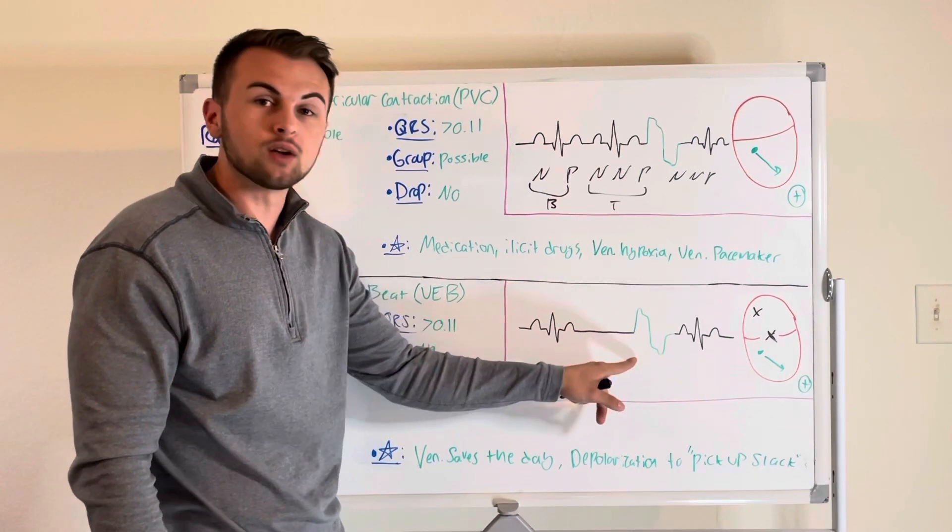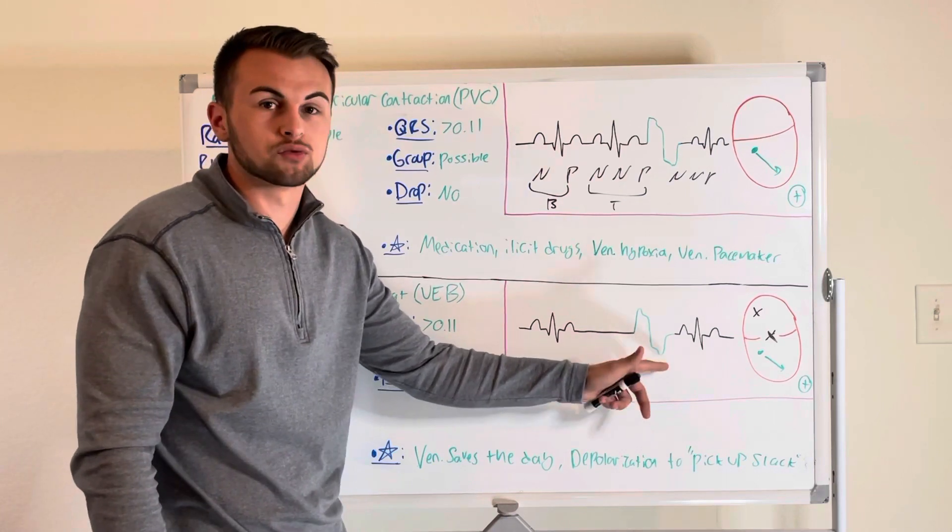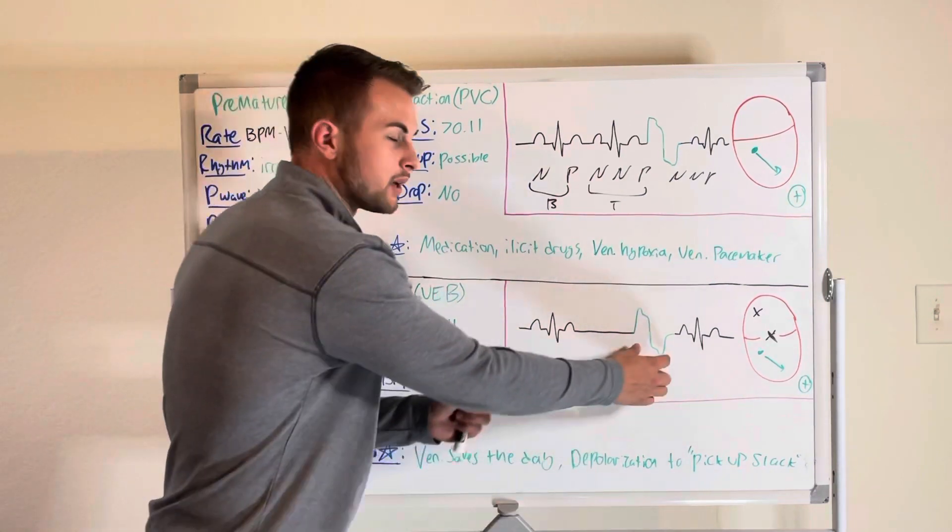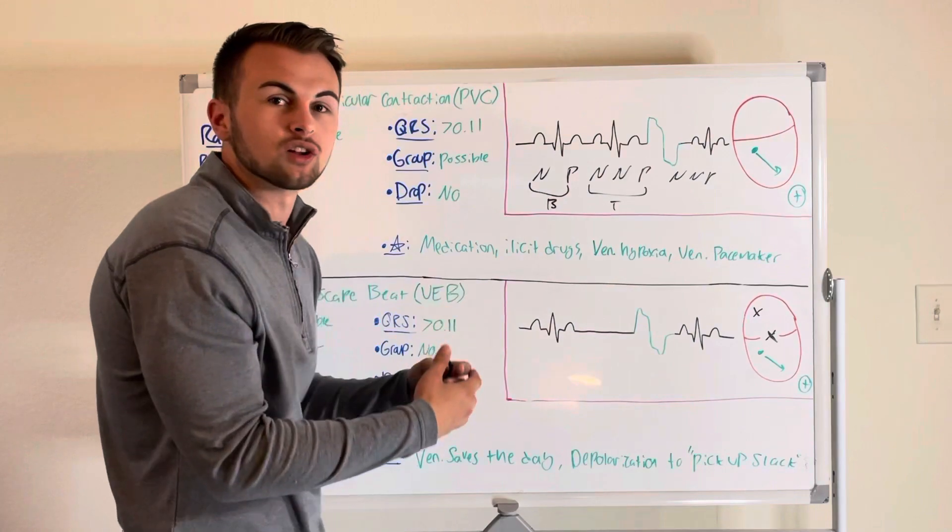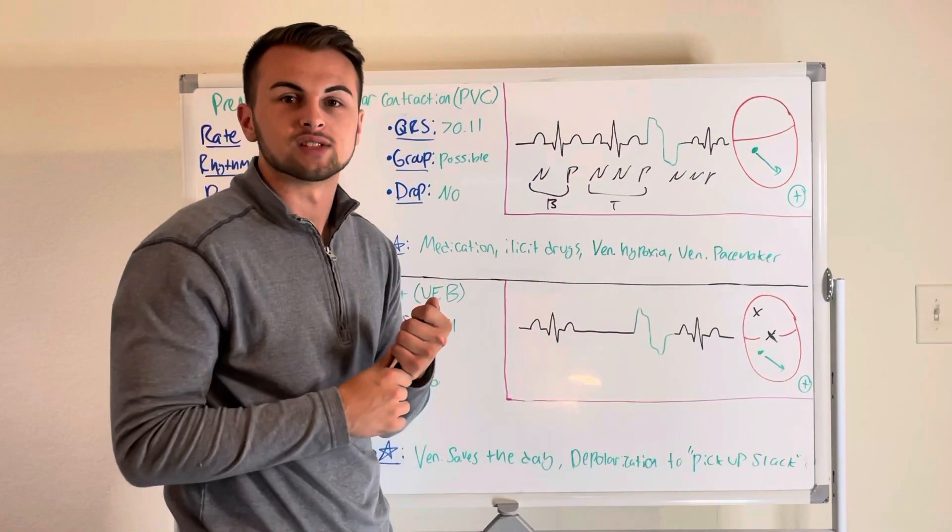There are no P waves, no PR interval, no P to QRS ratio, and the QRS will be bizarre and wide looking and irregular greater than 0.11 seconds.